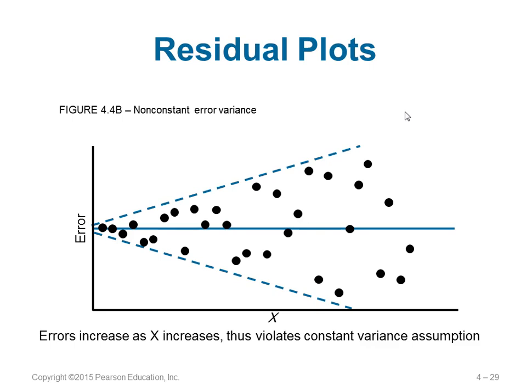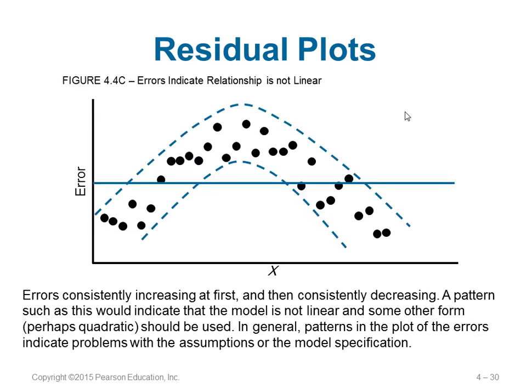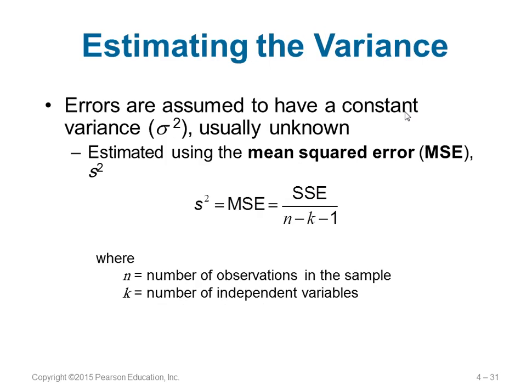In the next scenario, as x increases the error increases — this violates constant variance. We said irrespective of the value of x, error variance should be constant; here it is not. In another case, the error first increases then decreases following a non-linear pattern, which also violates assumptions. To find the mean squared error (MSE, also called S²): MSE = SSE / (n − k − 1), where n is the number of observations and k is the number of independent variables.